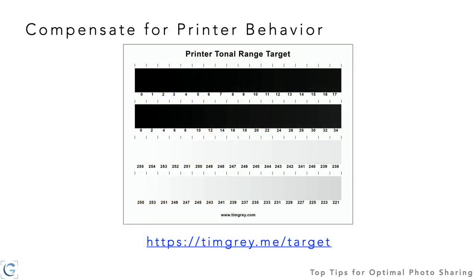When it comes to tonal values, make sure you're compensating for the behavior of your printer. Many printers, even with a perfect profile, will not produce a full range of tonal values — you'll often see that detail in the darkest shadow areas is lost in the print. I created a target image you can print with your normal workflow and then evaluate under bright light to find the darkest value that actually retains detail. You can download this target and learn how to use it in your workflow at timgray.me/target.